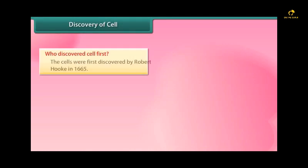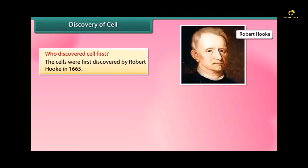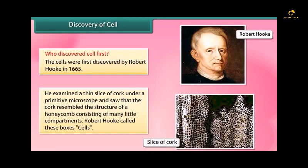Discovery of cell: Who discovered cell first? The cells were first discovered by Robert Hooke in 1665. He examined the thin slice of cork under a primitive microscope and saw that the cork resembled the structure of a honeycomb consisting of many little compartments. Robert Hooke called these boxes cells.